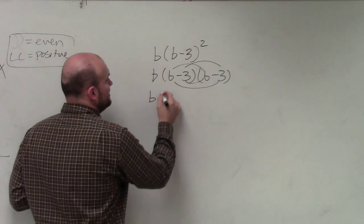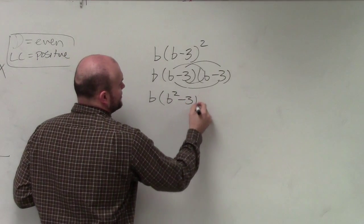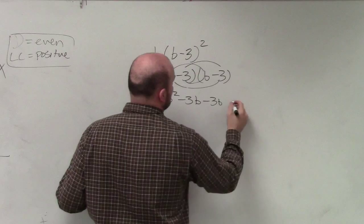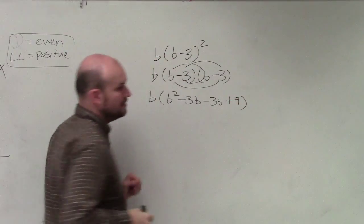So I have b times b is b squared, minus 3b, minus 3b, plus 9. Does everybody see that?